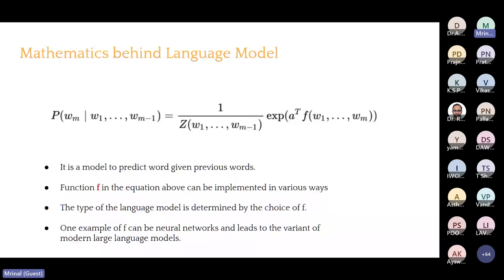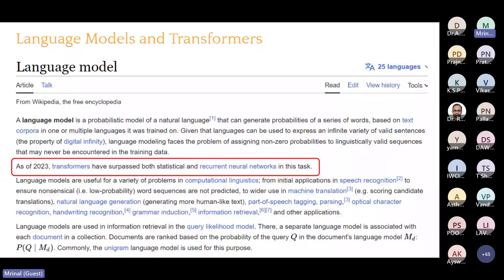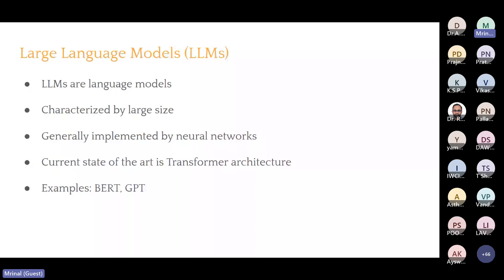From Wikipedia: as of 2023, transformers have beaten both statistical and recurrent neural networks in language modeling tasks. The state-of-the-art language model is now transformers. ChatGPT is a language model — so if you want to understand ChatGPT, you have to understand transformers. That is what we are going to do. Large language models are language models that are large in size — meaning many parameters — generally implemented by neural networks, and the current state of the art is the transformer architecture. Examples include BART, GPT, and similar models.